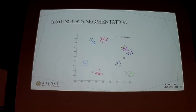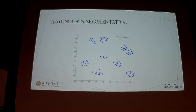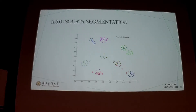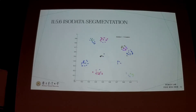This is an example of ISO data segmentation. It is an iterative process where, from the beginning, points are assigned based on the closest feed point. Iteratively the parameters are updated so that finally we get a segmentation based on the closest feed point.